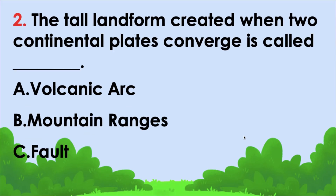The tall landform created when two continental plates converge is called blank. The correct answer is letter B — mountain ranges.